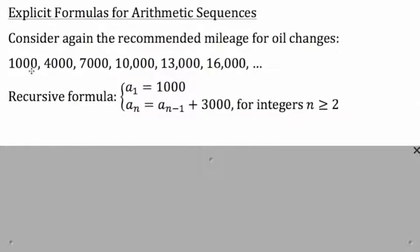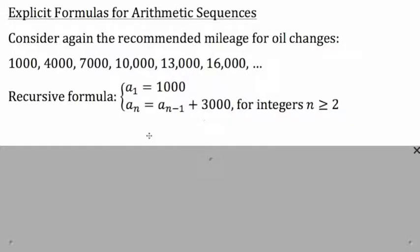We noticed that the first oil change was recommended after 1,000 miles. From there, each of the next oil changes were recommended after 3,000 miles — so we added 3,000 to find 4,000, then 3,000 more to find 7,000, then 3,000 more to find 10,000, and so on. So we were able to easily generate a recursive formula: the first term was 1,000, and each term after was found by adding 3,000 to the previous term.